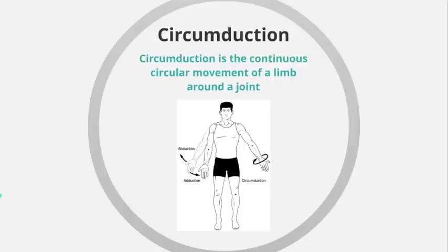Another example would be a gymnast on a beam. When they have one foot in front of the other, circumduction would be when they bring or swing the back foot around and place it in front of them on the beam.